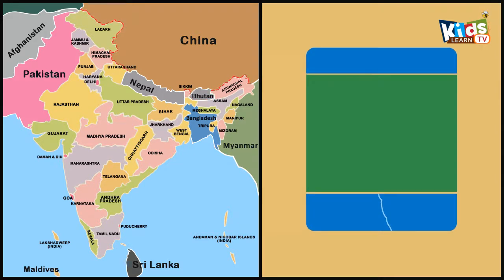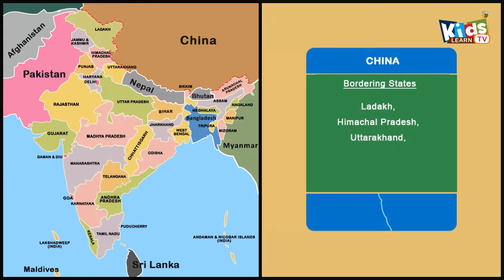The Indian states Ladakh, Himachal Pradesh, Uttarakhand, Sikkim and Arunachal Pradesh share the border with China. The border length is 3488 km.